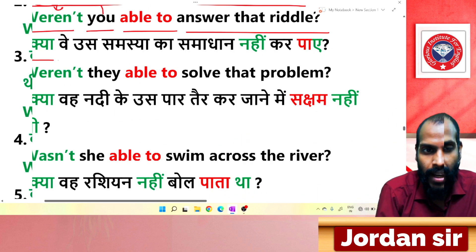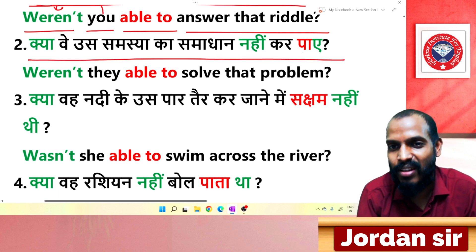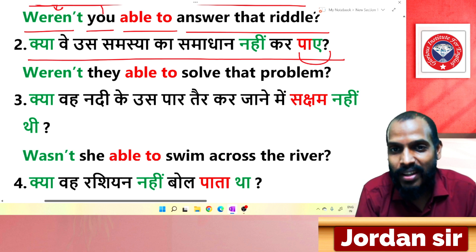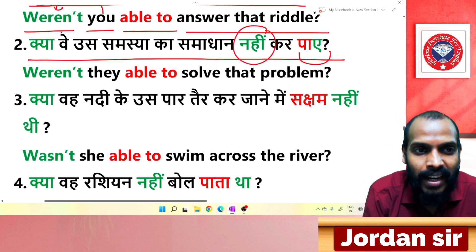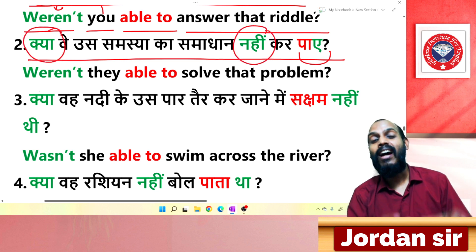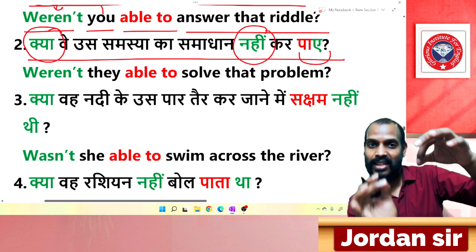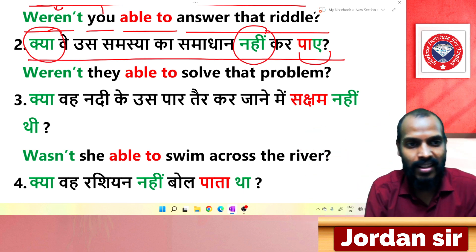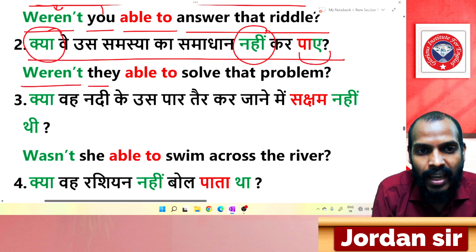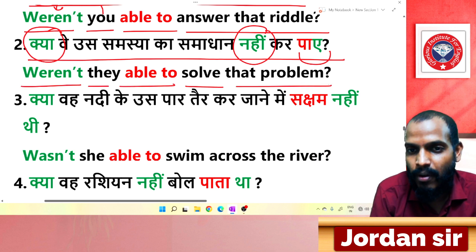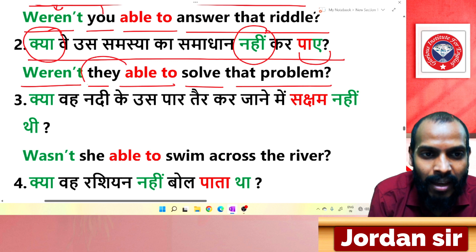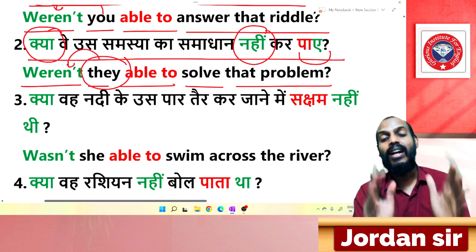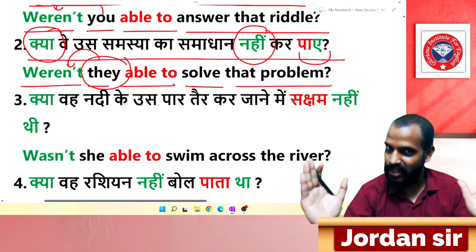Next negative interrogative: 'क्या वे उस समस्या का समाधान नहीं कर पाए?' The ending 'पाए' with 'नहीं' tells us negative interrogative. Subject 'they/वे' is plural, so 'weren't' is used before the subject. Translation: 'Weren't they able to solve that problem?'